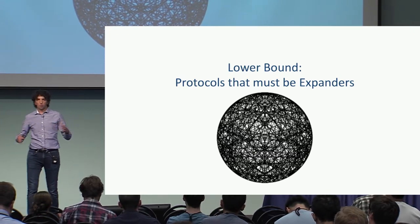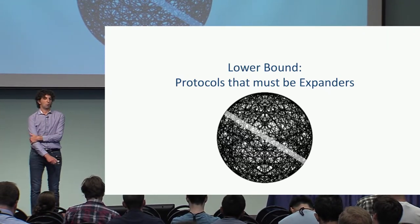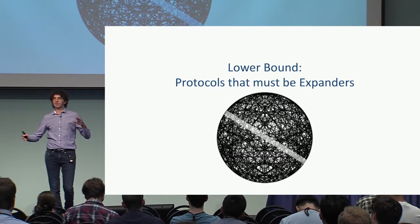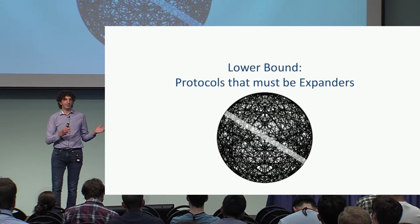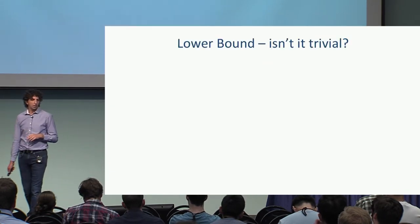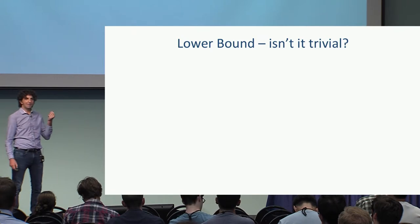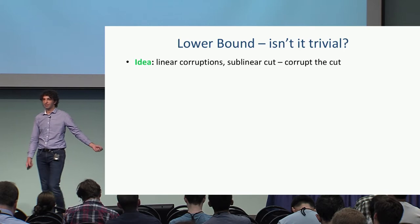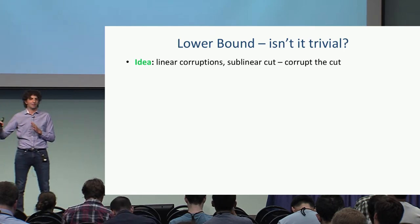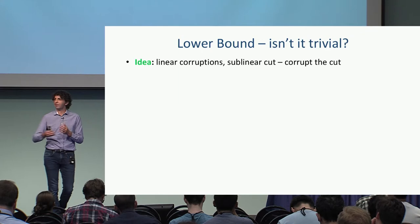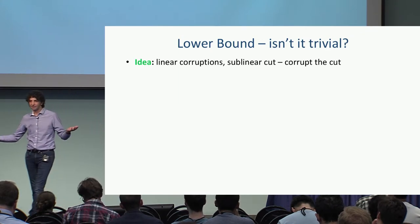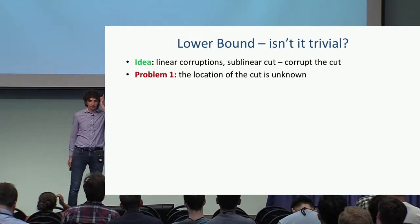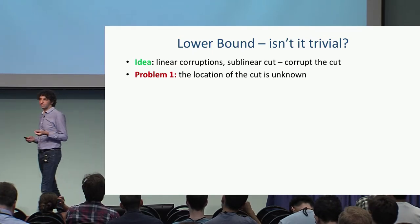Now the lower bound. Sometimes protocols not only must be an expander, but we show they cannot have any sublinear cut in the graph. When you start thinking about it: we have a linear number of corruptions and we're guaranteed the graph has a sublinear cut — isn't it trivial to just corrupt the cut? But with adaptive corruption, there are subtle issues. The graph is dynamic, so we don't know where the cut is going to be.